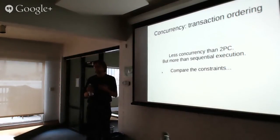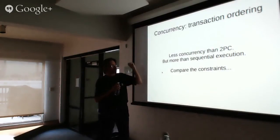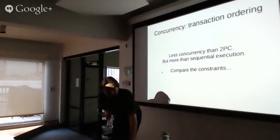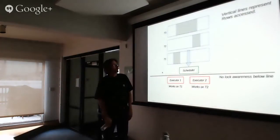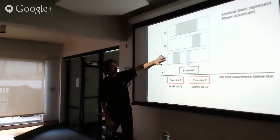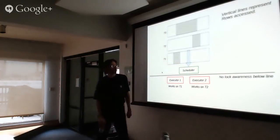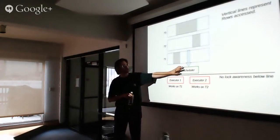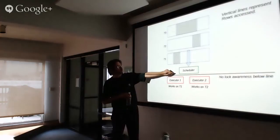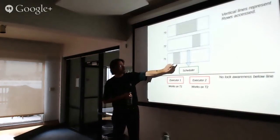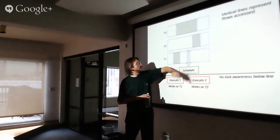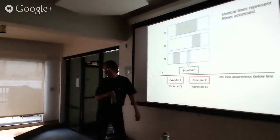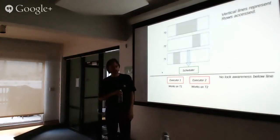Calvin has less flexibility than two-phase commit for reordering, but it can do better than pure serial execution. Here's a simple example with three transactions queued up. The scheduler checks the lock manager: T1 tries to lock some rows — fine. T2 tries to lock some rows — fine because these are disjoint sets. So T1 and T2 can be assigned to different executors and run concurrently. T3 will be blocked while T1 and T2 are running if there's overlap. With a third executor thread, we could put T3 in as well.